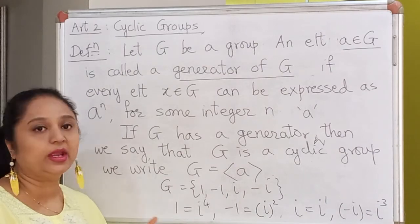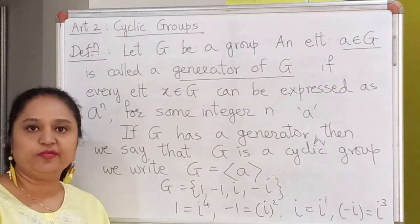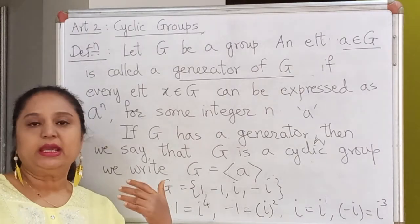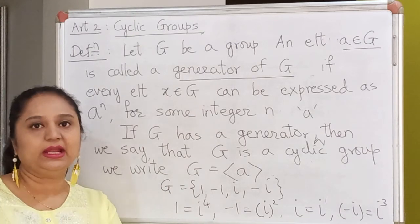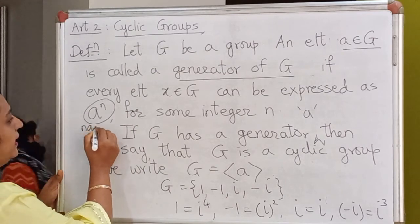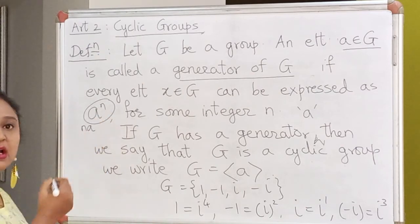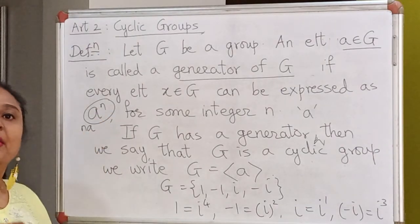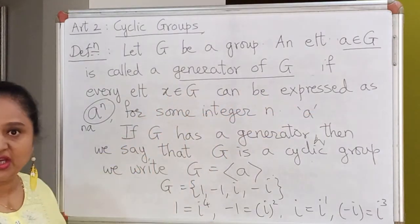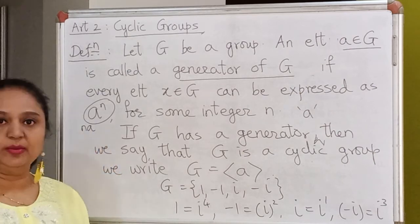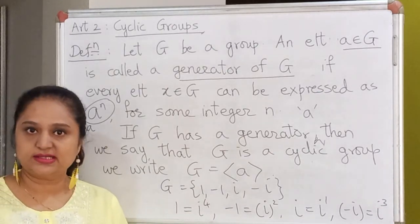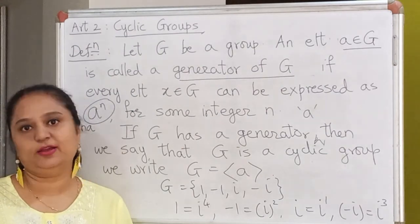An important point worth noting is that when the group operation is additive rather than multiplicative, instead of taking an integral power of A, you look at an integral multiple of A — that is, N times A. So the only change is that every element in G should be expressible as an integral multiple of A. Then A is called a generator and the group is said to be cyclic. That's all for this session. In the next class, we will see some examples of cyclic groups. Thank you.